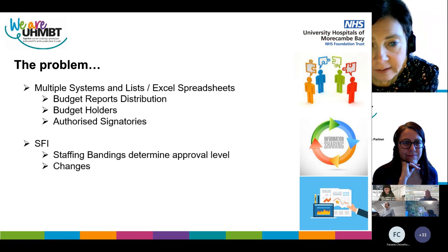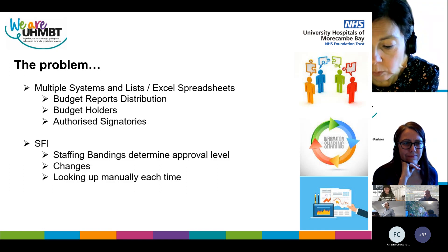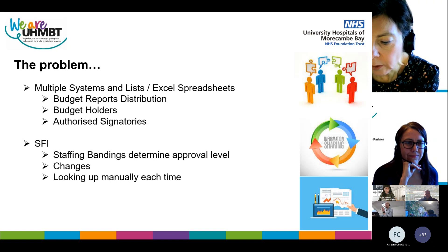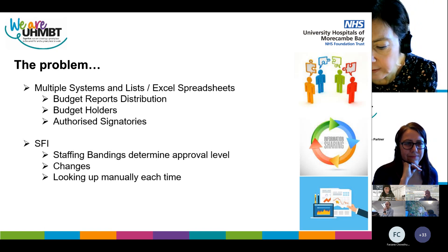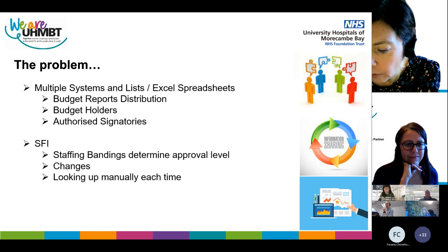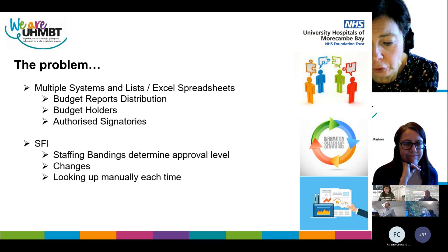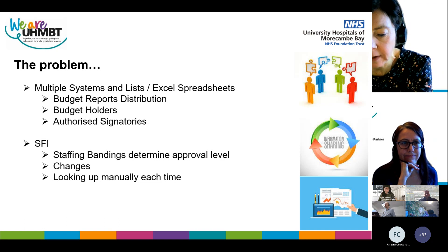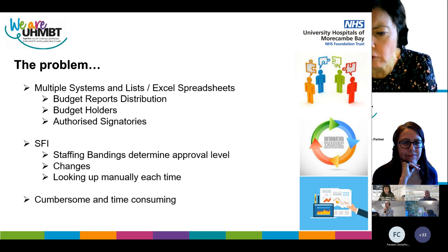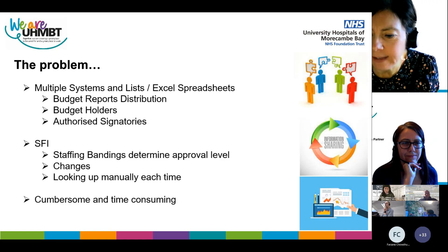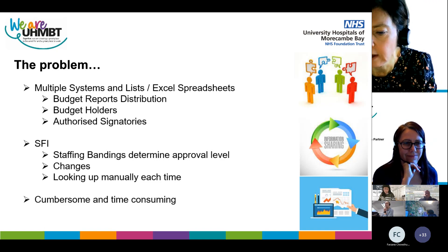Our SFIs aligned staff bandings with approval level, so that meant that when an analyst was asked to set up somebody new, they had to find out what that staff member's pay was and where that aligned with the SFIs, so they could know what level of expenditure that member of staff could be responsible for. So it was a very cumbersome way of trying to find and maintain the data in different areas and it was quite time-consuming for the analysts.